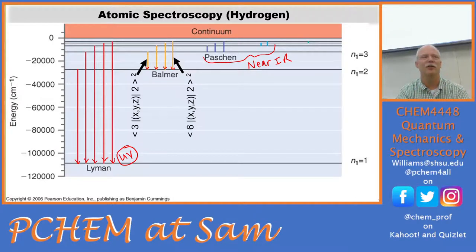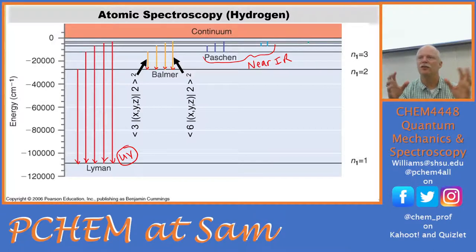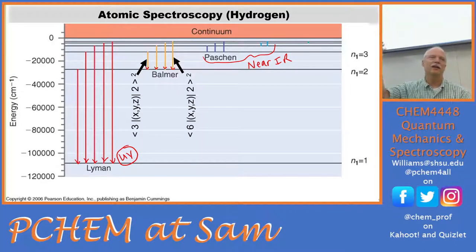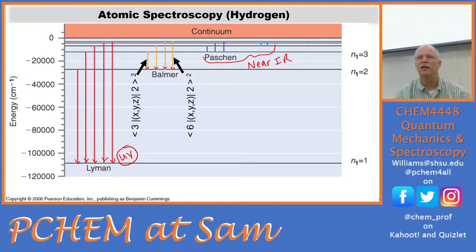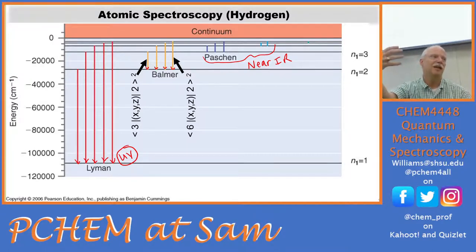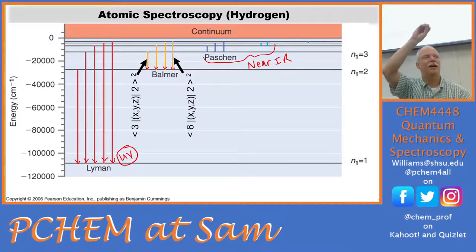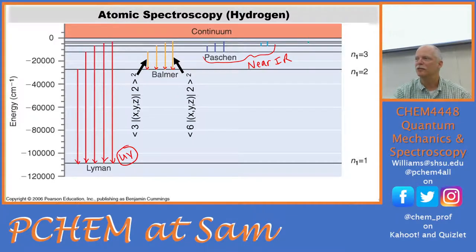We've got spectrometers hooked to fancy telescopes — we can collect light from a star and see its brightness and composition. We also see some lines for oxygen and nitrogen, which is our atmosphere. As solar light comes into the upper atmosphere where we have single atoms like nitrogen and oxygen, we can see their absorption spectrum too.